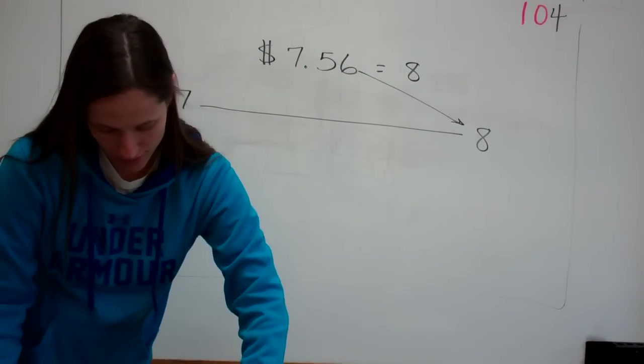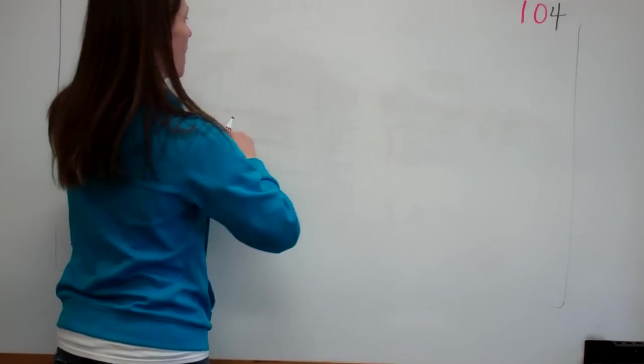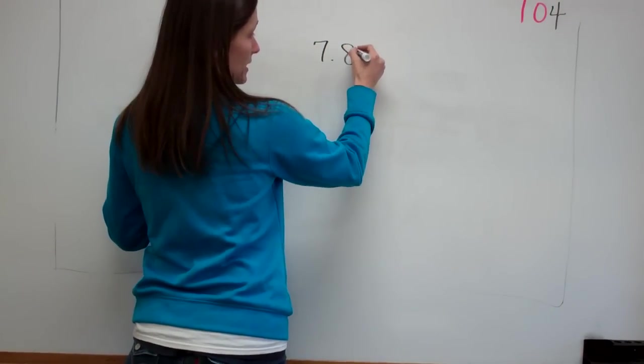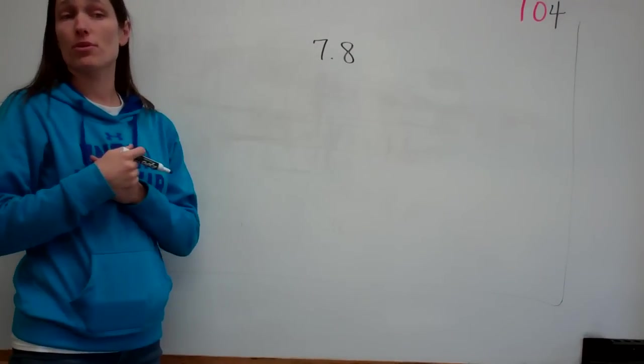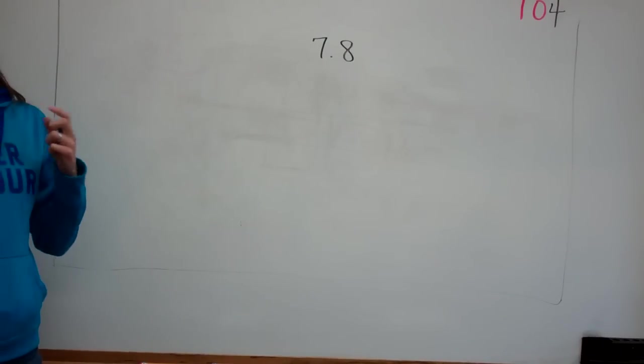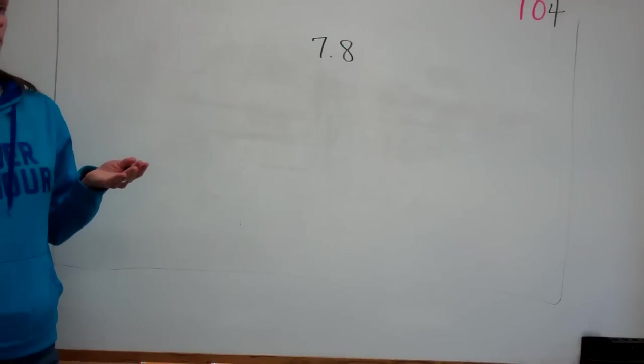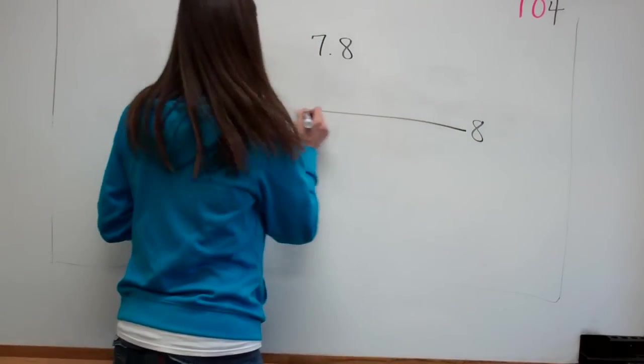Now try this one. Without a money symbol, what two whole numbers is this in between? I know what it is. Okay. First of all, tell me which two whole numbers it's in between. Seven and eight. It's in between seven and eight, somewhere in between here.